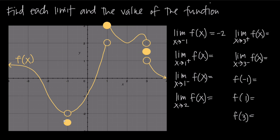When finding a limit, it's not necessarily the actual value of the function — it's the y-value you're approaching as you trace the graph. Now, the notation with a little plus sign like an exponent on the 1 means as x approaches 1 from the positive, or right-hand, side. The minus sign means as x approaches 1 from the negative, or left-hand, side.